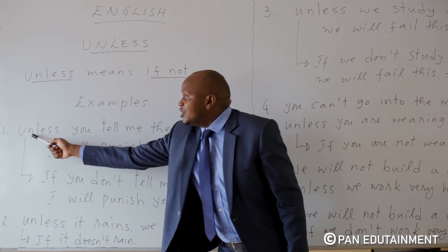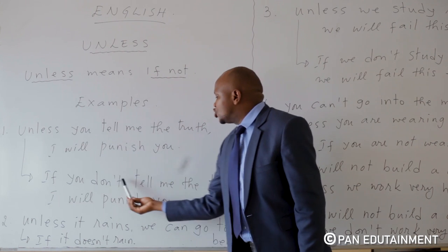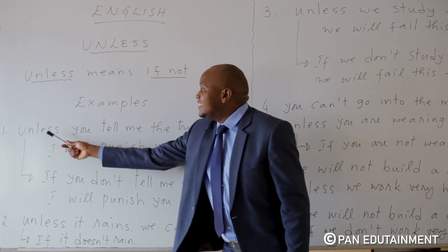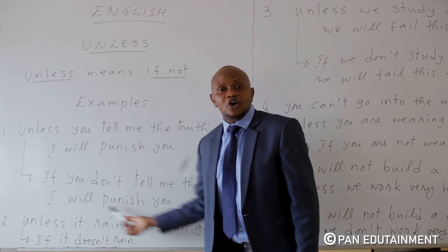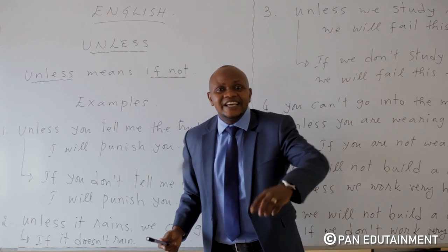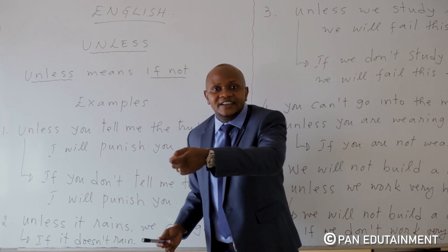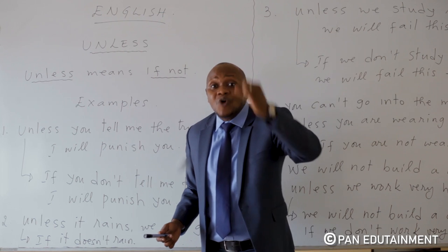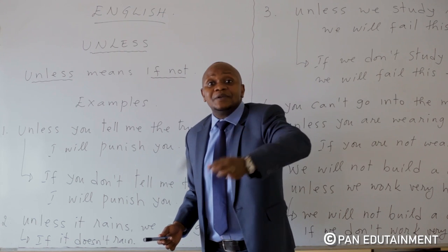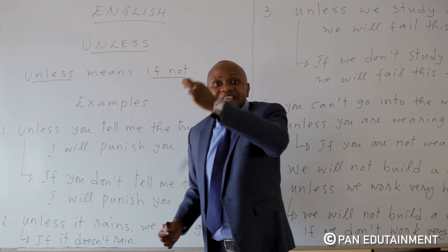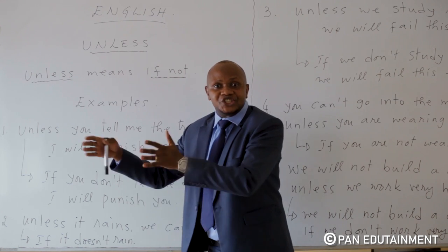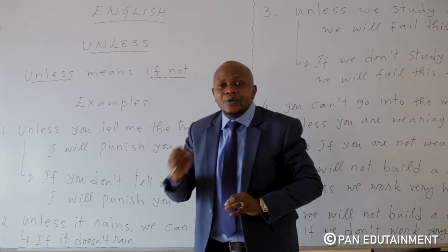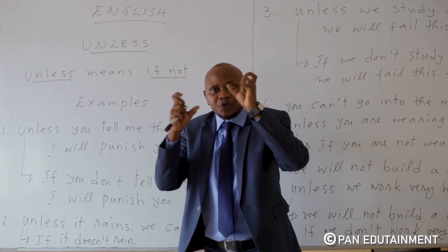For example: I will punish you if you don't tell me the truth. So — I will punish you unless you tell me the truth. If he doesn't go there, I will punish her. Unless he goes there, I will punish her. If she doesn't go there, I will punish her — unless she goes there, I will punish her.